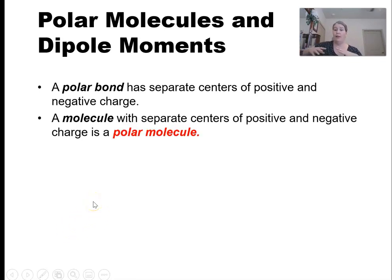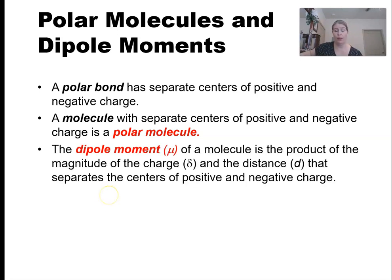Now if I can scale this up over the entire molecule, if the molecule as a whole has an uneven distribution or a lopsided distribution of electrons, that is then a polar molecule. And a polar molecule has what's called an overall dipole moment.